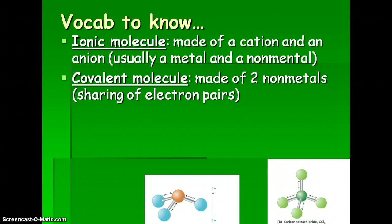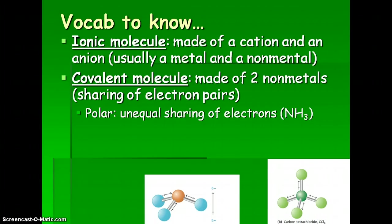There are two types of covalent molecules. One is a polar covalent molecule, where you have unequal sharing of electrons. The more electronegative element has electrons pulled more towards that atom, such as in ammonia, NH3. The arrow goes towards the more negative, more electronegative atom, and the plus side goes towards the less electronegative atom, which is essentially more positive. You can also see this with the negative and sigma positive notation.